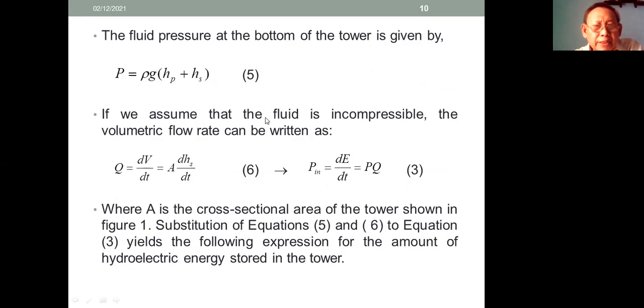If we assume that the fluid is incompressible, the volumetric flow rate can be written as Q = dV/dT, where A is the cross-sectional area of the tower.